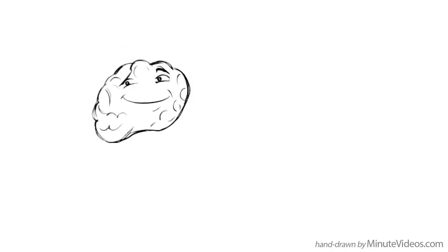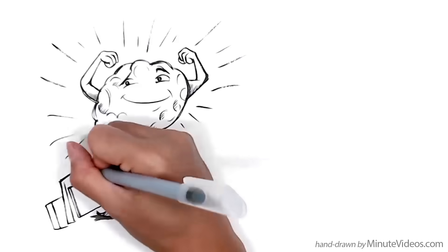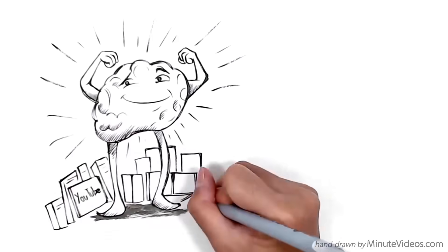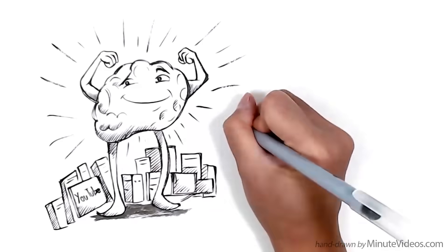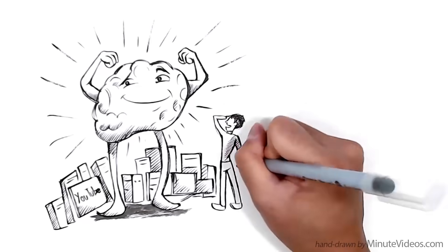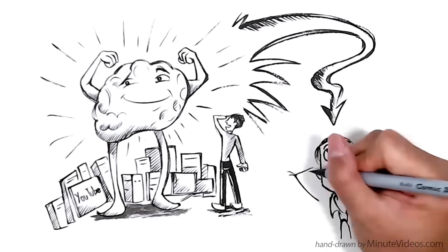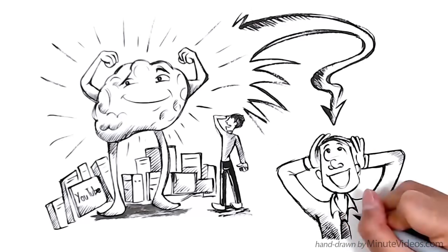Our brain can potentially memorize 2.5 petabytes of information, which is roughly the equivalent of 3 million hours of YouTube videos. In order to use some of that staggering capacity a little more effectively when you learn, here are some tips that are based on widely accepted research by neuroscientists and learning experts.